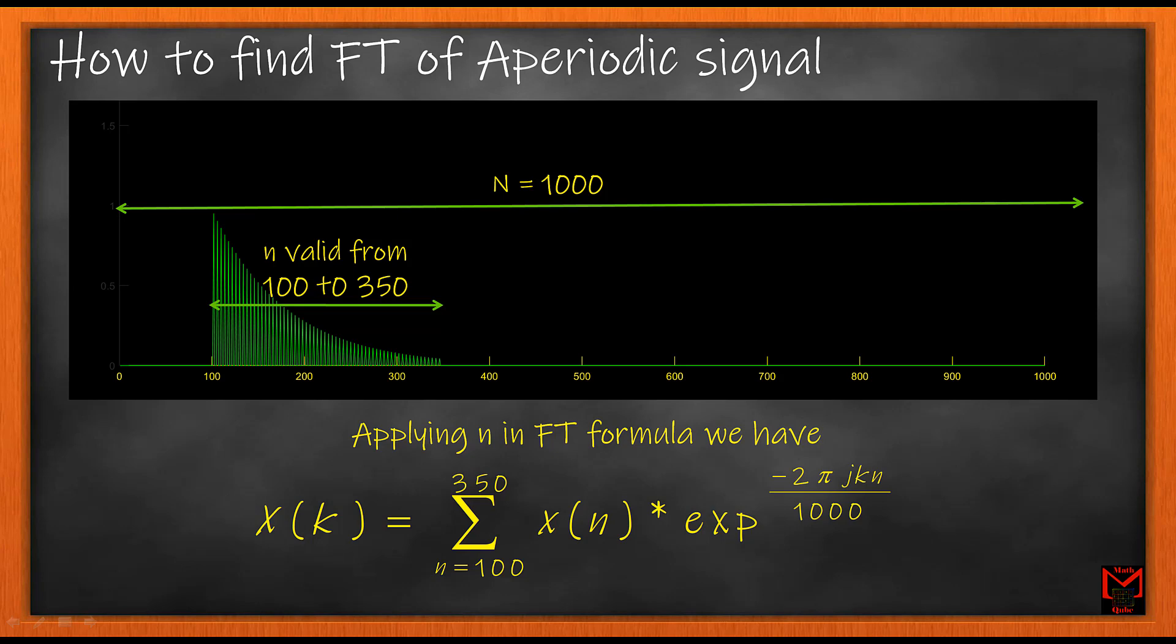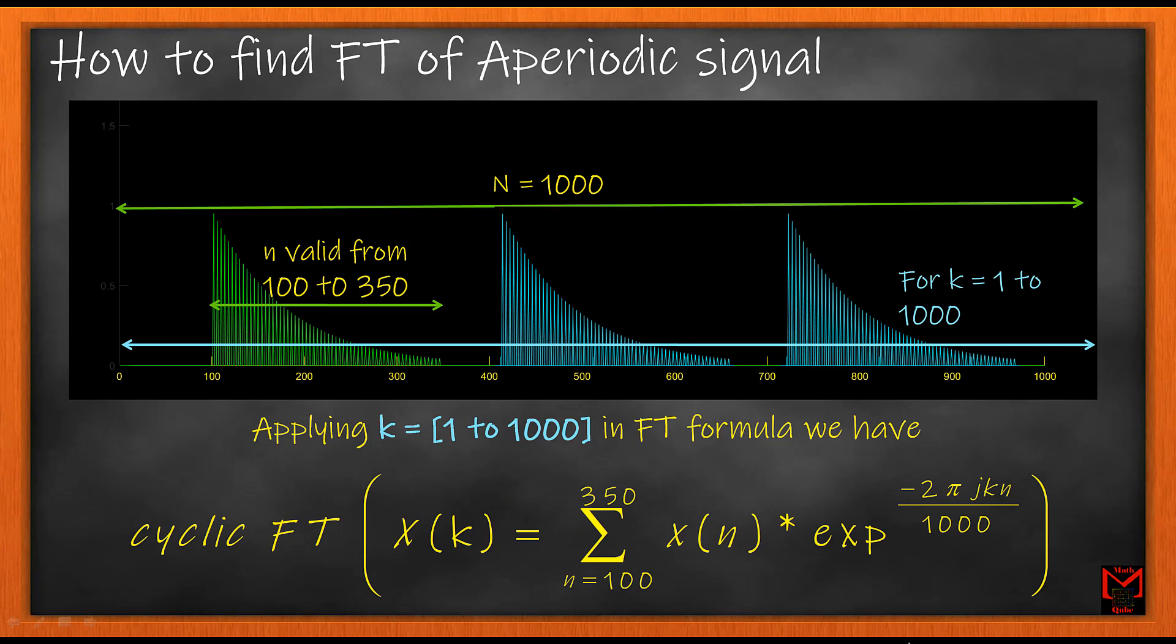This input signal will have a Fourier Transform which will span from k equals 1 to 1000. This means that the Fourier Transform of our signal will have 3 cycles, as we can fit 3 signal Fourier Transforms from 1 to 1000.